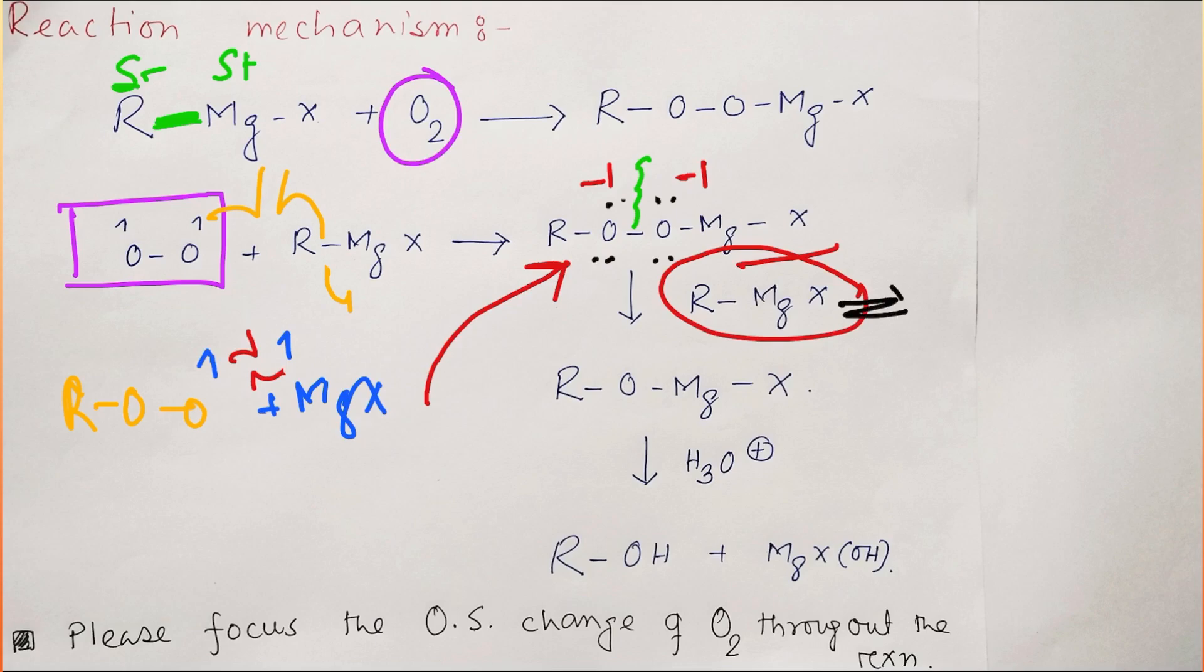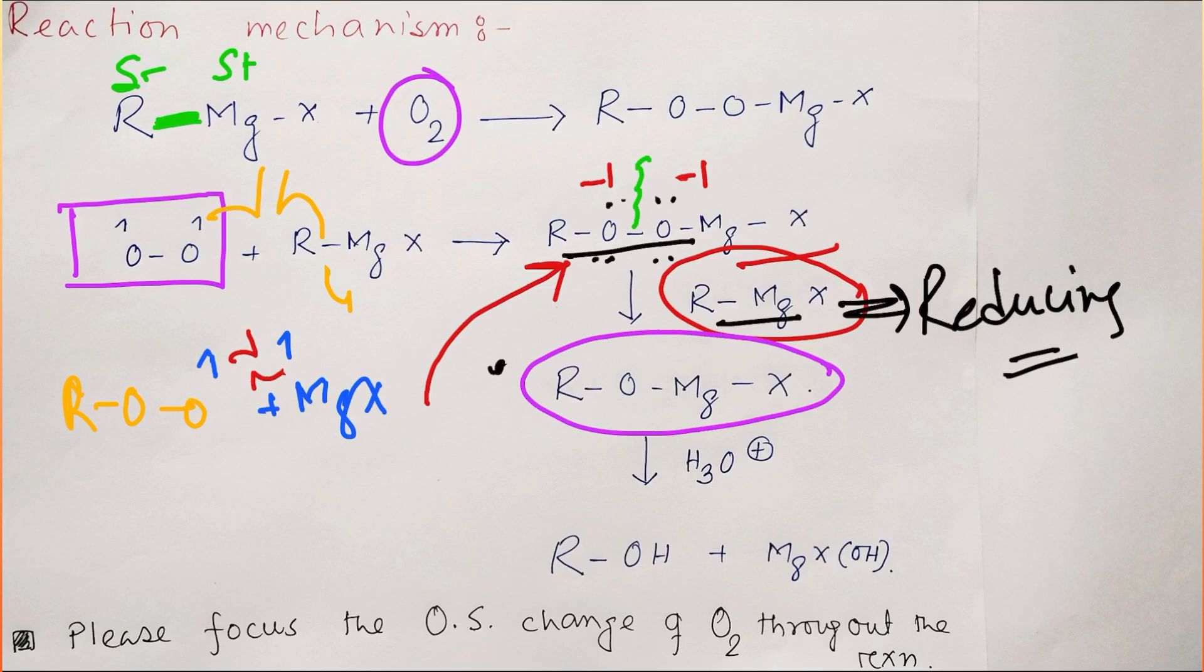So consequently what will happen? It will react with Grignard reagent, and Grignard reagent here will act as a reducing agent. And what will it reduce? It will reduce the peroxide into the corresponding alkoxide. And more accurately, if we write this: one molecule plus one molecule will produce two molecules of alkoxide. And upon hydrolysis of alkoxide in acidic water, will produce this alcohol and MgOHX.